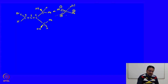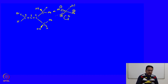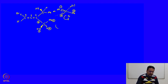Here what we see is 1 to 2 to 3 is anti-clockwise, and we are looking from the side opposite to the lowest priority group hydrogen. So this must be S. In the same way, the bottom carbon has priority 1, the back group has priority 2, this has priority 3 and the hydrogen has priority 4. For this carbon, if we go from 1 to 2 to 3 we see that it is clockwise, so it must be R.